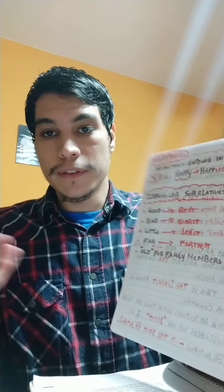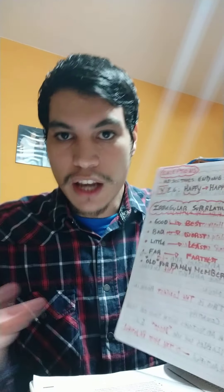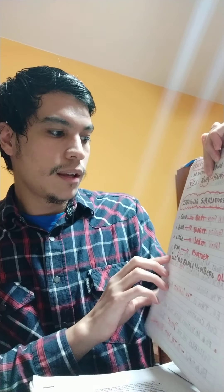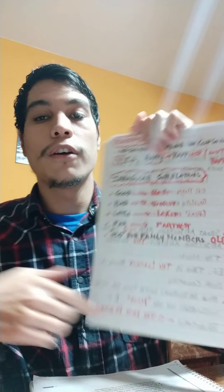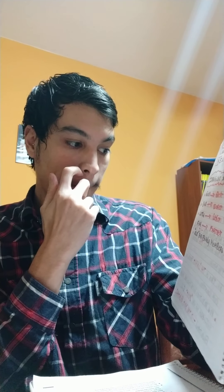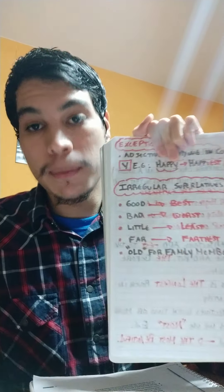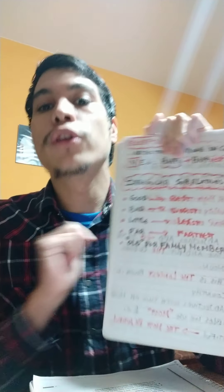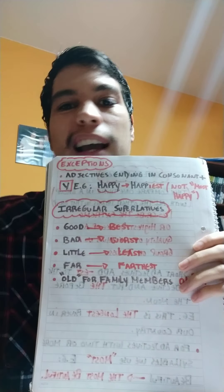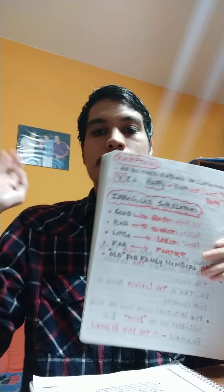Irregular superlatives: tenemos algunos adjetivos que cambian completamente. Good → best, bad → worst, little → least, far → farthest. And old — for family members, para decir que alguien es el mayor de todos, we use 'eldest' or 'oldest'. The oldest — el más grande de todos.